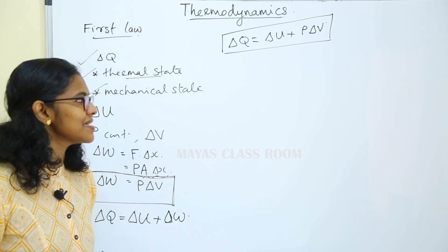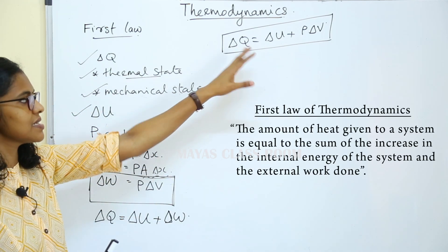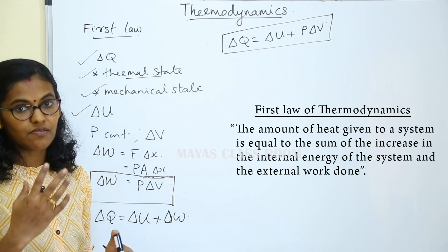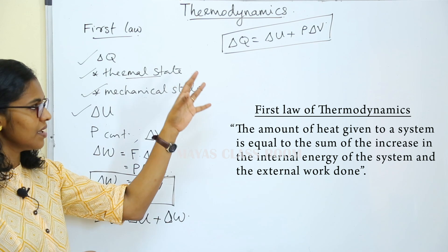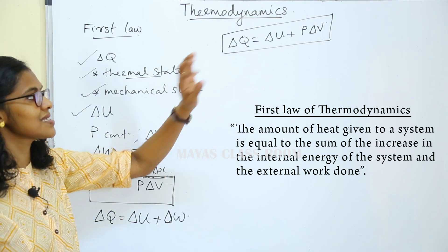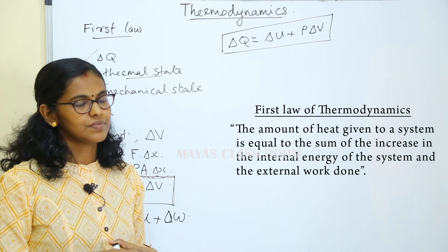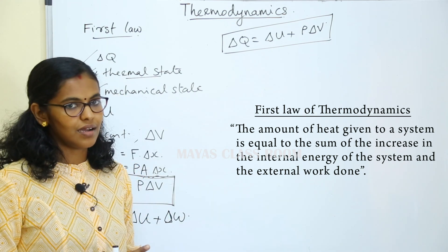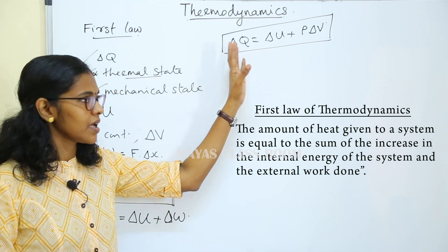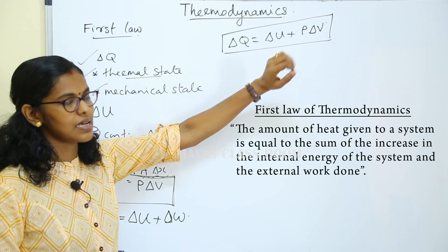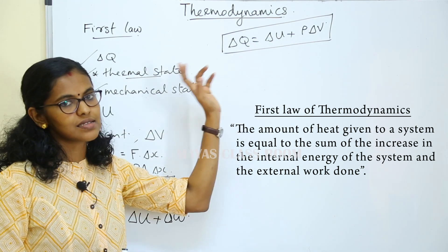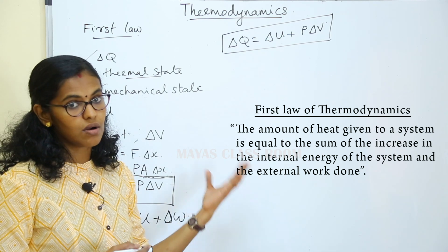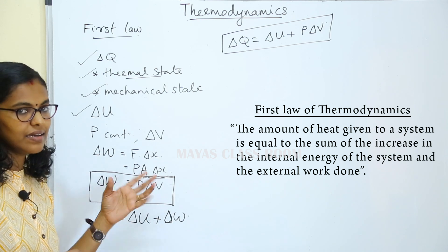The first law of thermodynamics states that the amount of heat given to a system is equal to the sum of the increase in internal energy of the system and the external work done. The amount of heat given to a system: a part of the energy is used to increase internal energy and the other part is used to do external work. That is the first law of thermodynamics.